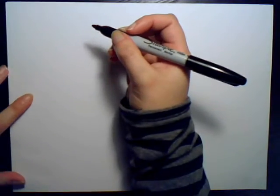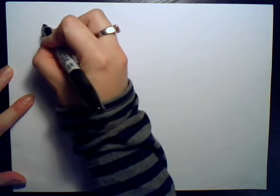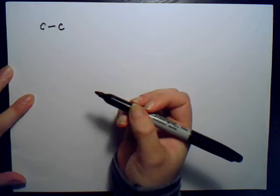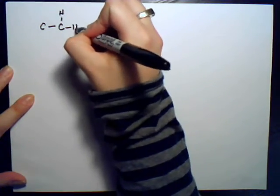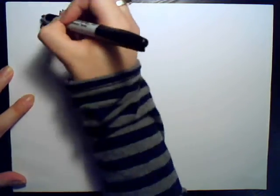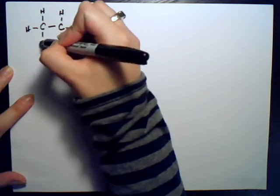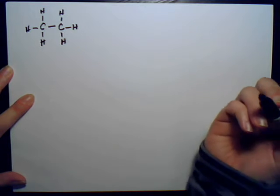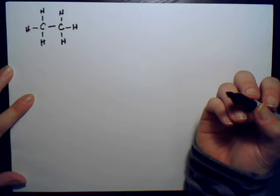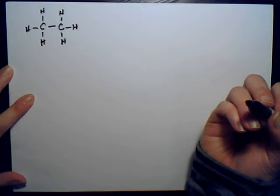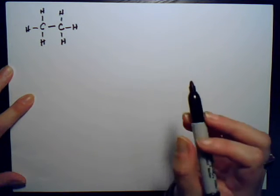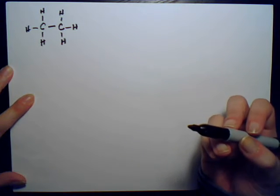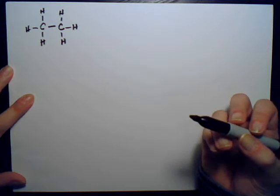First, I'll give you a basic carbon chain, which would be represented by two carbons connected to each other with hydrogens attached. We're going to be discussing hydrocarbons first — just carbons and hydrogens — and the naming comes from the carbon backbone, counting how many carbons there are.